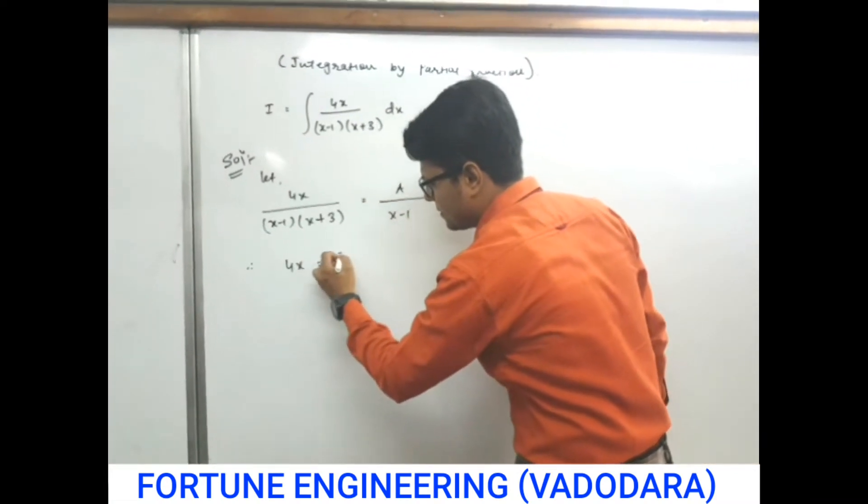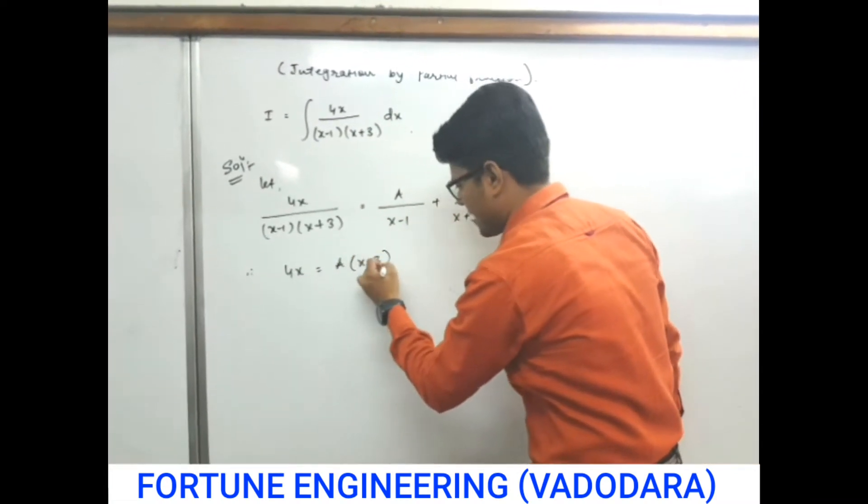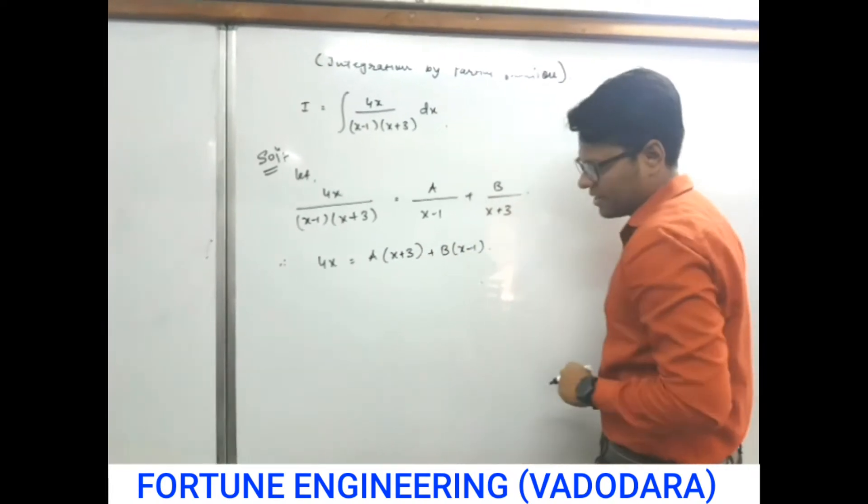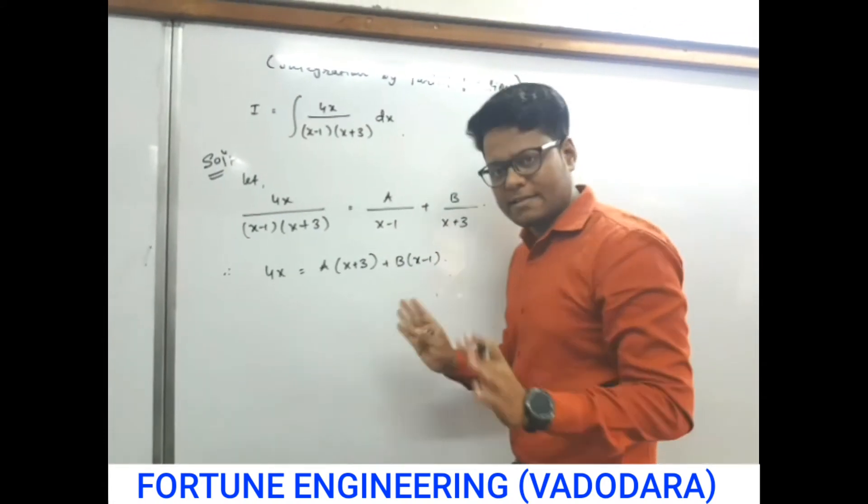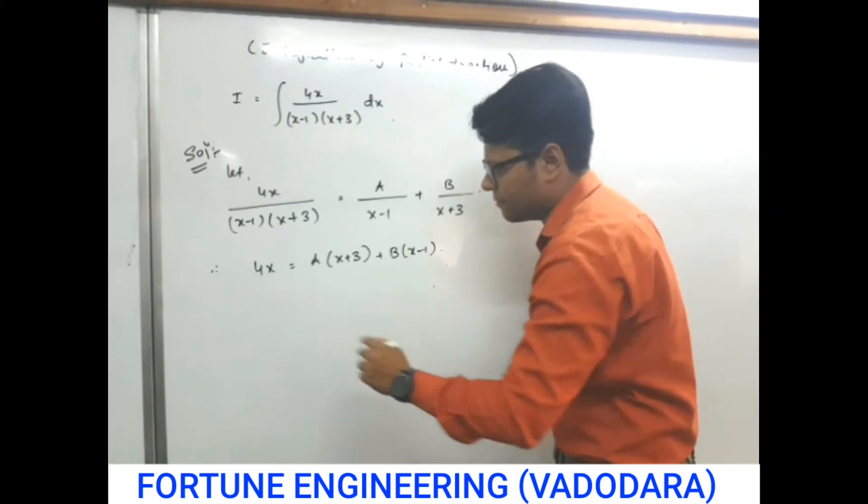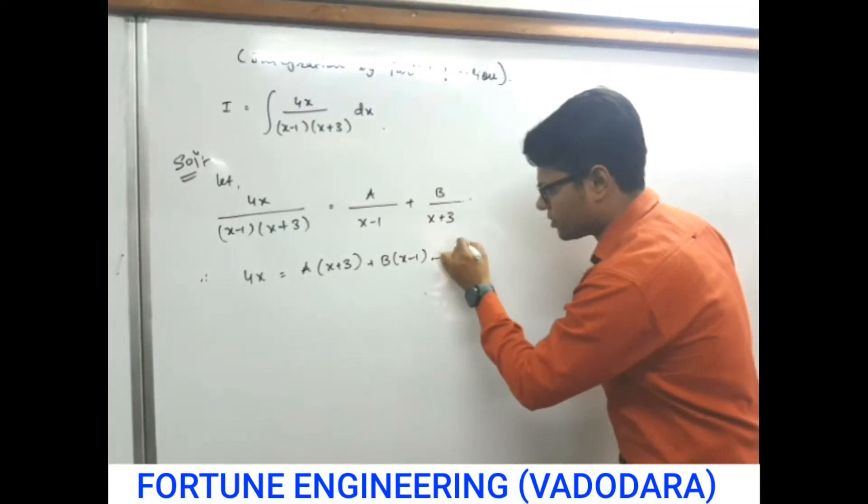So 4x, a, x plus 3, b, x minus 1. Now, from both the sides, LCM gets cancelled. So no need to write the LCM. Now, give it to equation number 1.